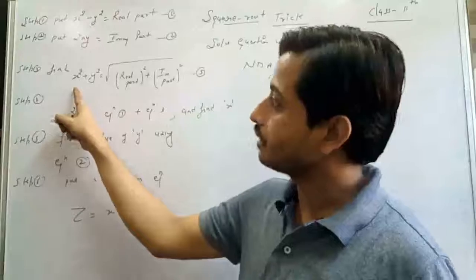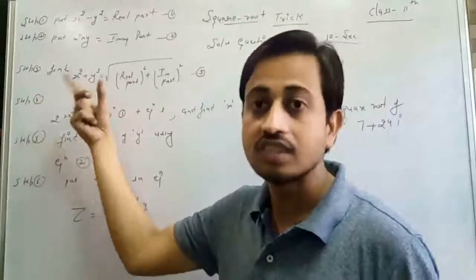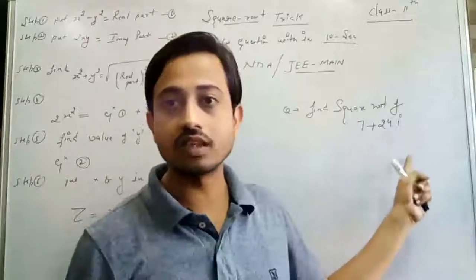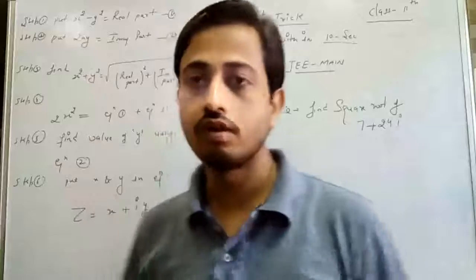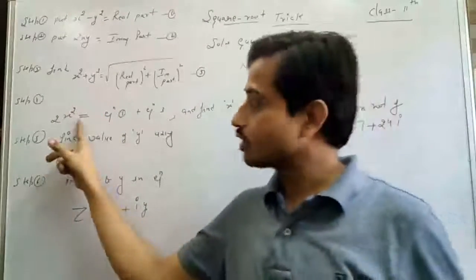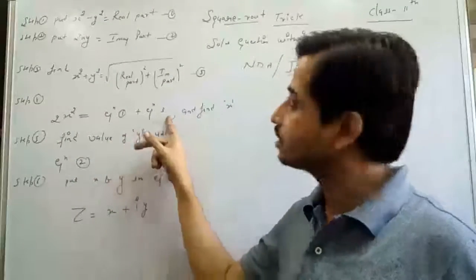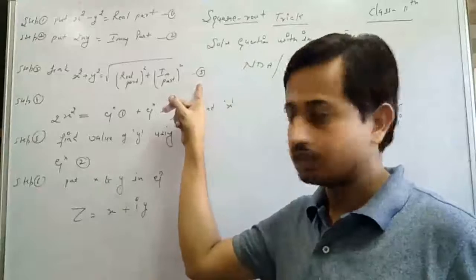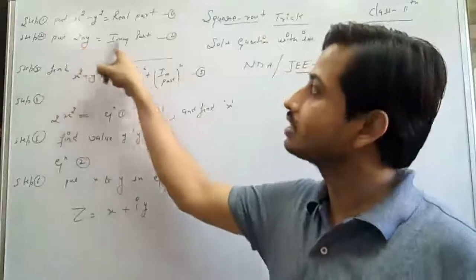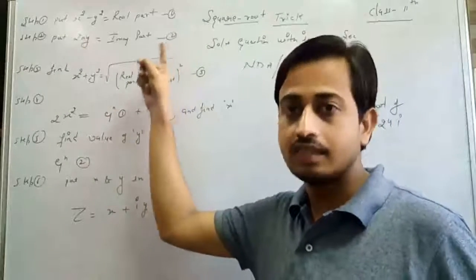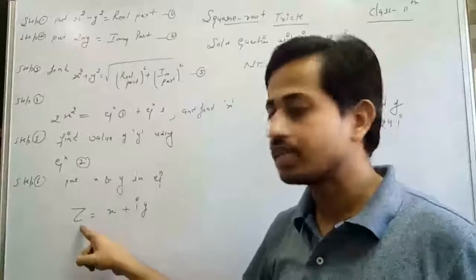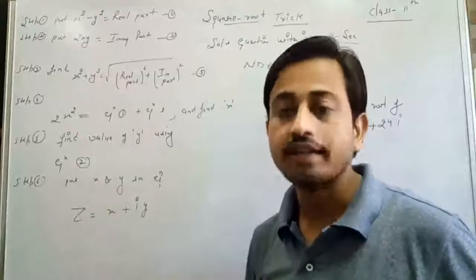The third step is to find X² plus Y², which equals the square root of (real part² plus imaginary part²). The fourth step is to solve: 2X² equals equation 1 plus equation 3. That means we add equations 1 and 3. Step 5: find the value of Y using equation 2, which is 2XY equal to the imaginary part. Step 6: put all values of X and Y into Z equals X plus iota·Y for the final answer.